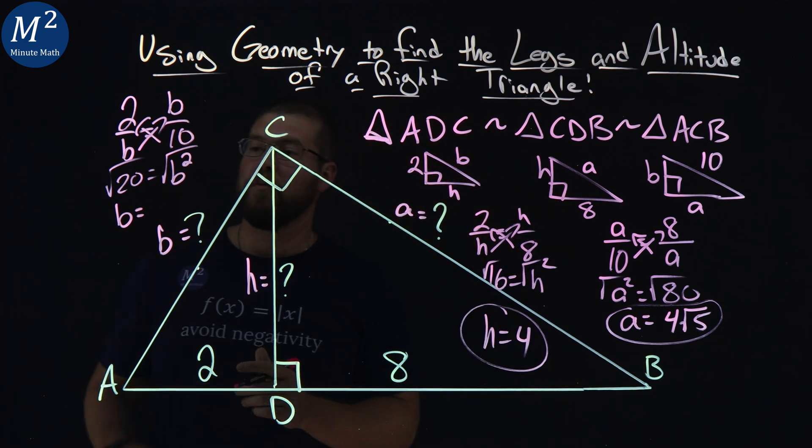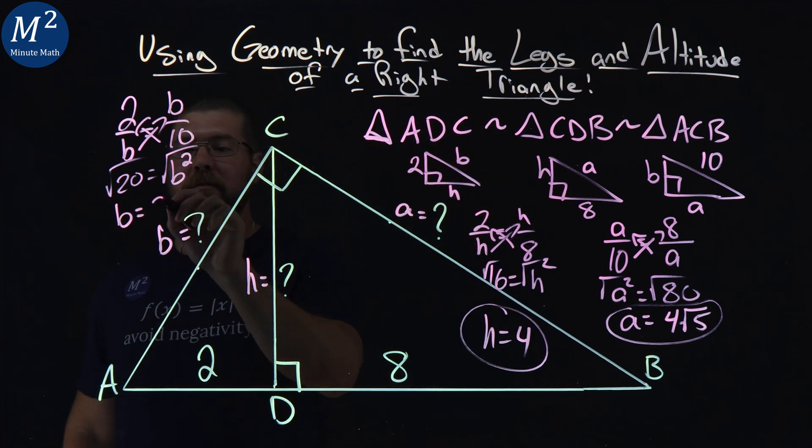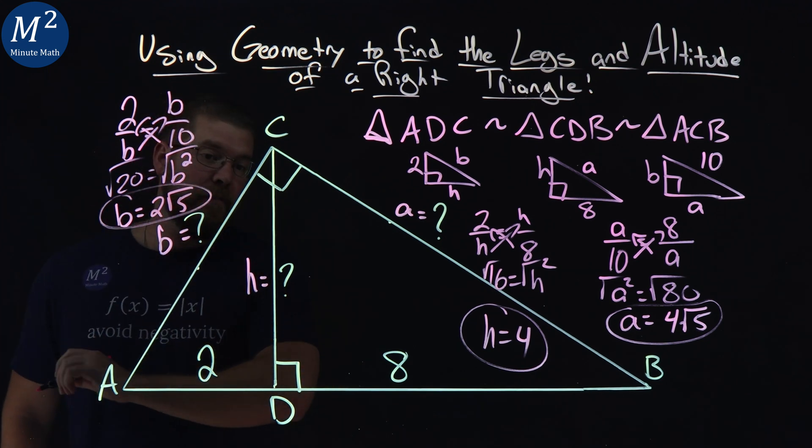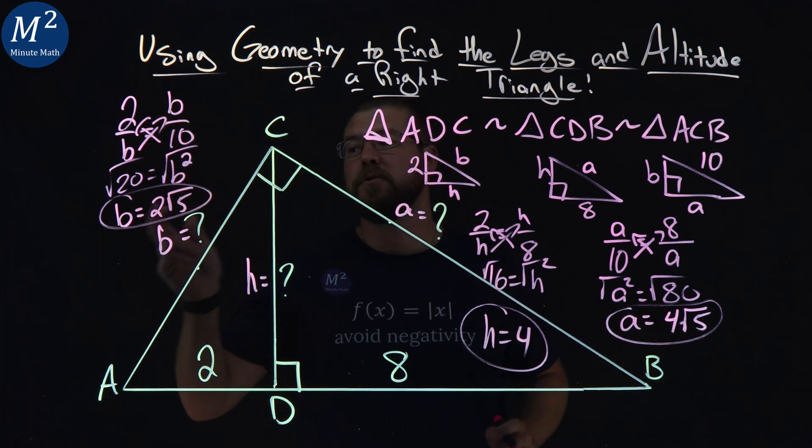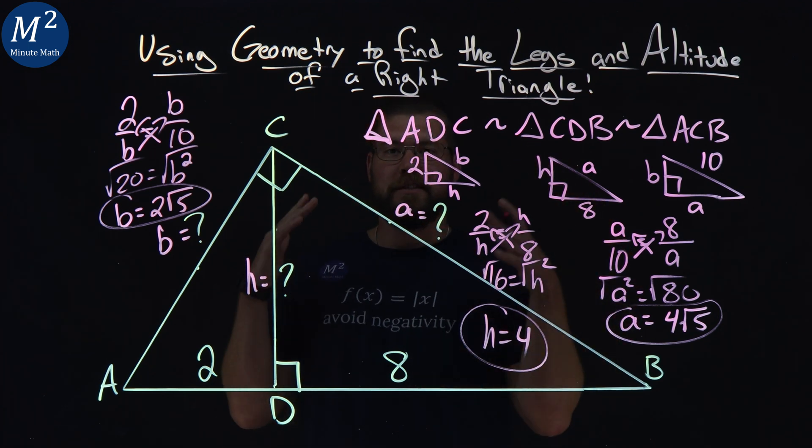Just double check. Sorry, it's 2 square root of 5. And we got a b value here. So there we have it. We have the two legs, 4 square root of 5 and 2 square root of 5, and a height of 4 with just the values that were given.